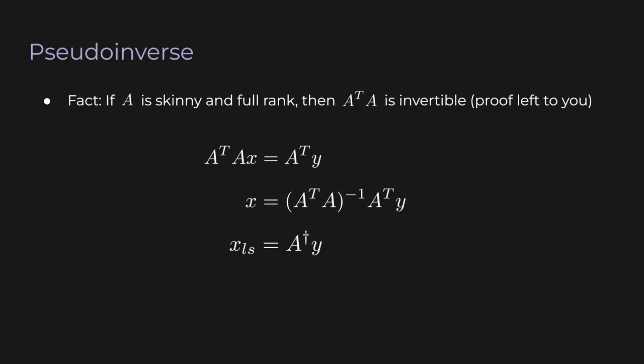So A dagger, we're defining that to be this big expression, inverse of A transpose A times A transpose. That whole thing is called A dagger. And that is known as the pseudo inverse of A. If A is square, A could have an inverse. But A in this case is skinny. So there's no way it could have an inverse, but if it's skinny and full rank, it will always have a pseudo inverse. So this thing, this A dagger is always going to be defined. It's always going to exist.